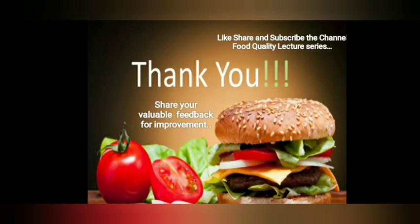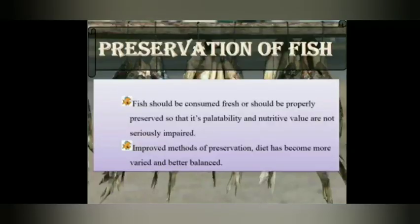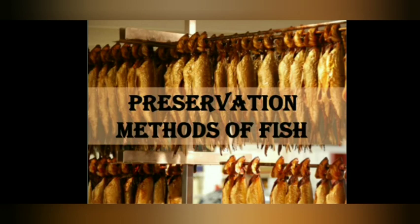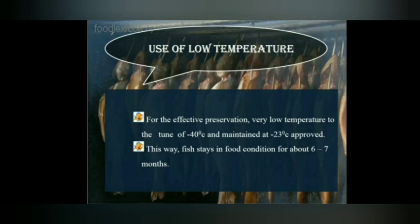To safeguard nutritional value and keep fish safe for eating, preservation techniques are essential. Fish should only be consumed fresh. Preservation methods include low temperature techniques — starting at minus 40°C and maintained at minus 23°C as approved by ICMR and RDA (Recommended Dietary Alliance Authority) — by which fish will stay preserved for 6 to 7 months. Chilling involves covering fish with a layer of ice and is used for shorter periods before distribution to markets or canning factories.